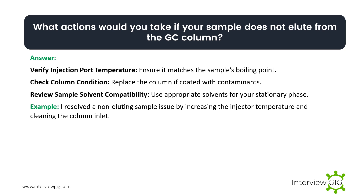What actions would you take if your sample does not elute from the GC column? Verify injection port temperature — ensure it matches the sample's boiling point. Check column condition — replace the column if coated with contaminants. Review sample-solvent compatibility — use appropriate solvents for your stationary phase. Example: I resolved a non-eluting sample issue by increasing the injector temperature and cleaning the column inlet.